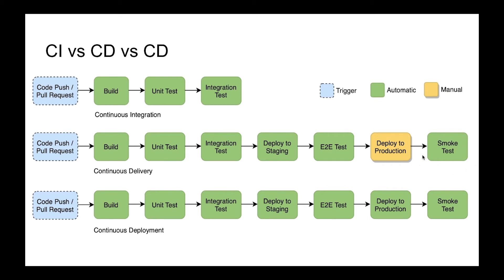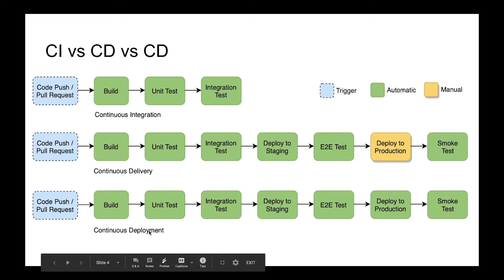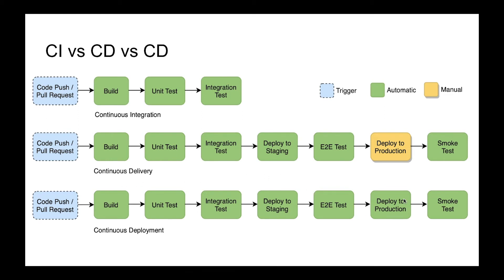Continuous deployment is almost the same but with one small change: it deploys to production in an automatic way. We do not need a person to click a button — all changes will go to production automatically in case the tests were green, and if just one test fails they will not be deployed to production.